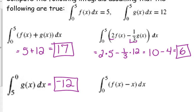Now, they also like to throw these in there. The integral from 0 to 5 of f of x minus x. Be careful with this. Split this up. This is the integral from 0 to 5 of f of x dx minus the integral from 0 to 5 of x dx.